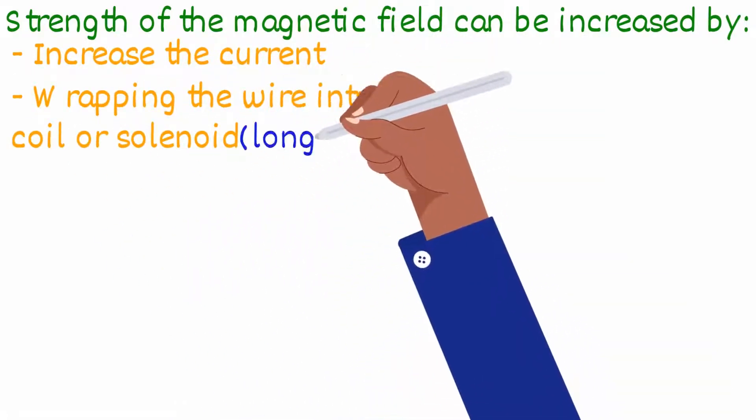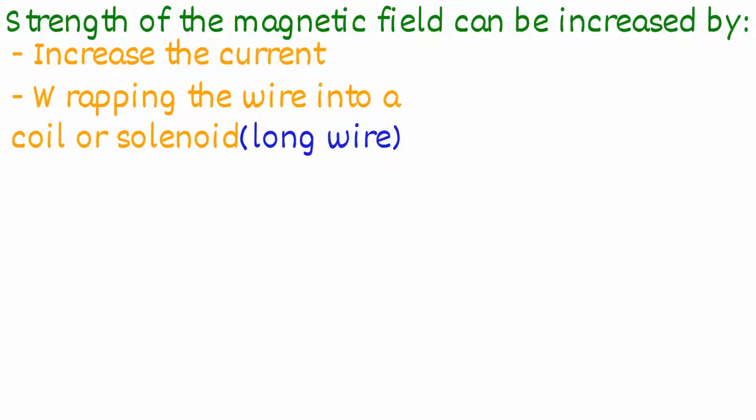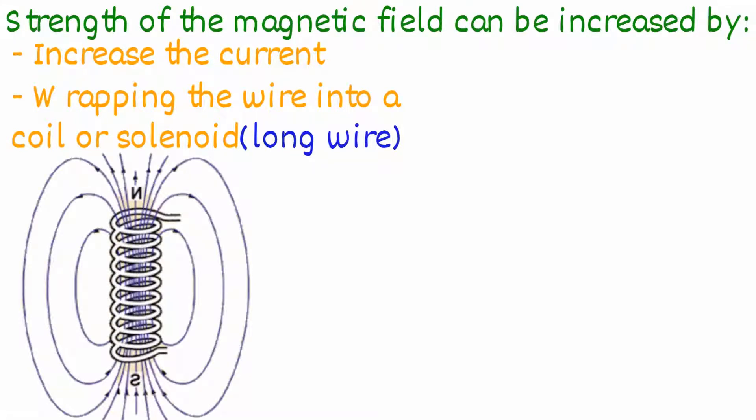A solenoid is basically a long coiled wire. The magnetic field around a solenoid will look like this.